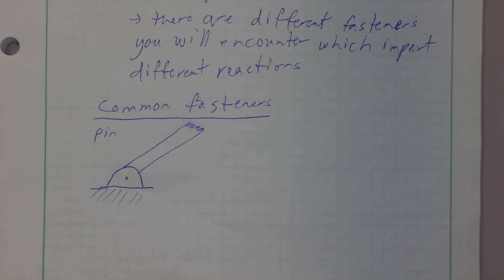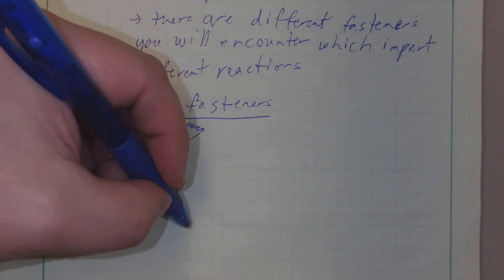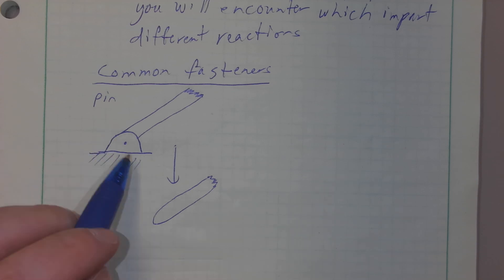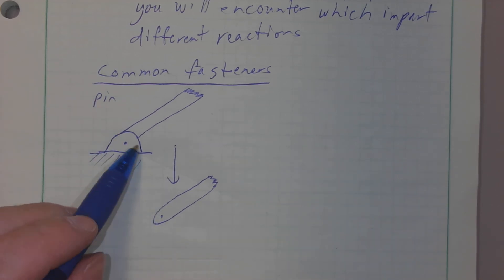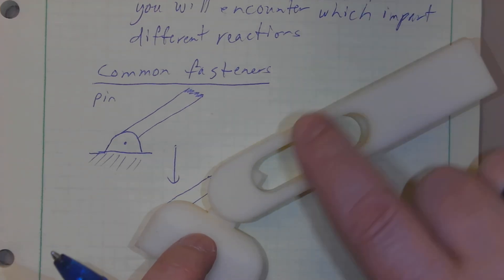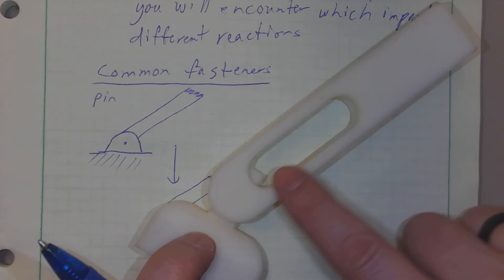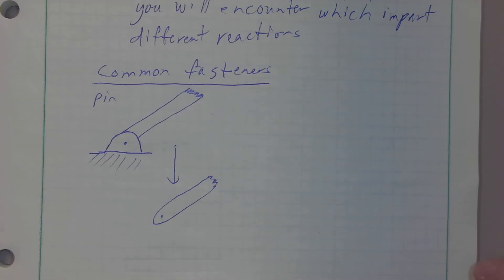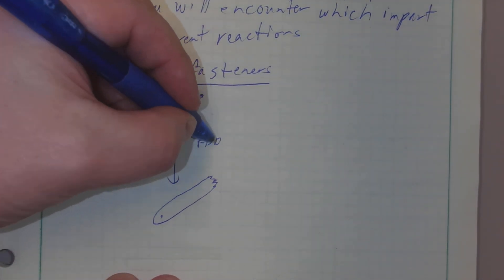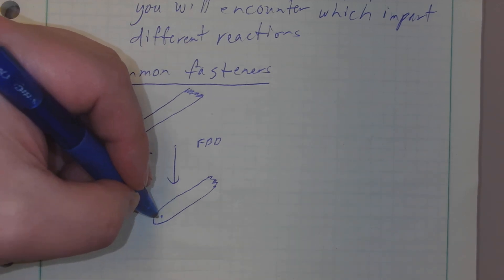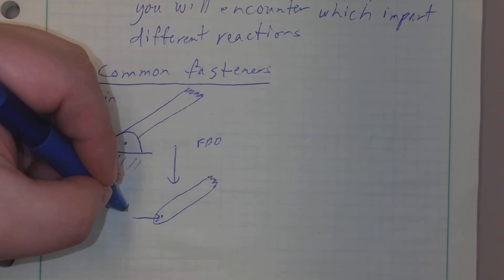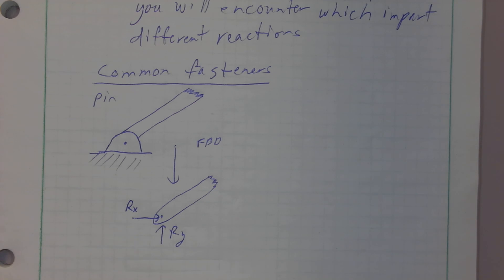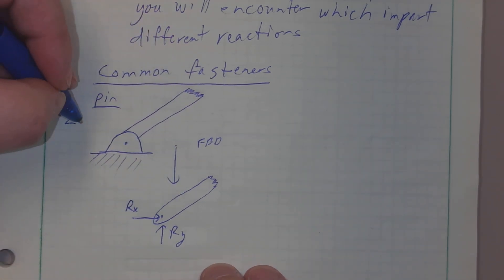So a pin is a common fastener. If I were to draw this on a free body diagram I would draw it one of two ways. The most common way: I would remove the pin structure and just draw this anchor point. I'm really only worried about the structure out here, not what's going on with the ground. At the pin connection I would replace it with an unknown reaction in the x direction and an unknown reaction in the y direction. A pin is going to have two unknowns.